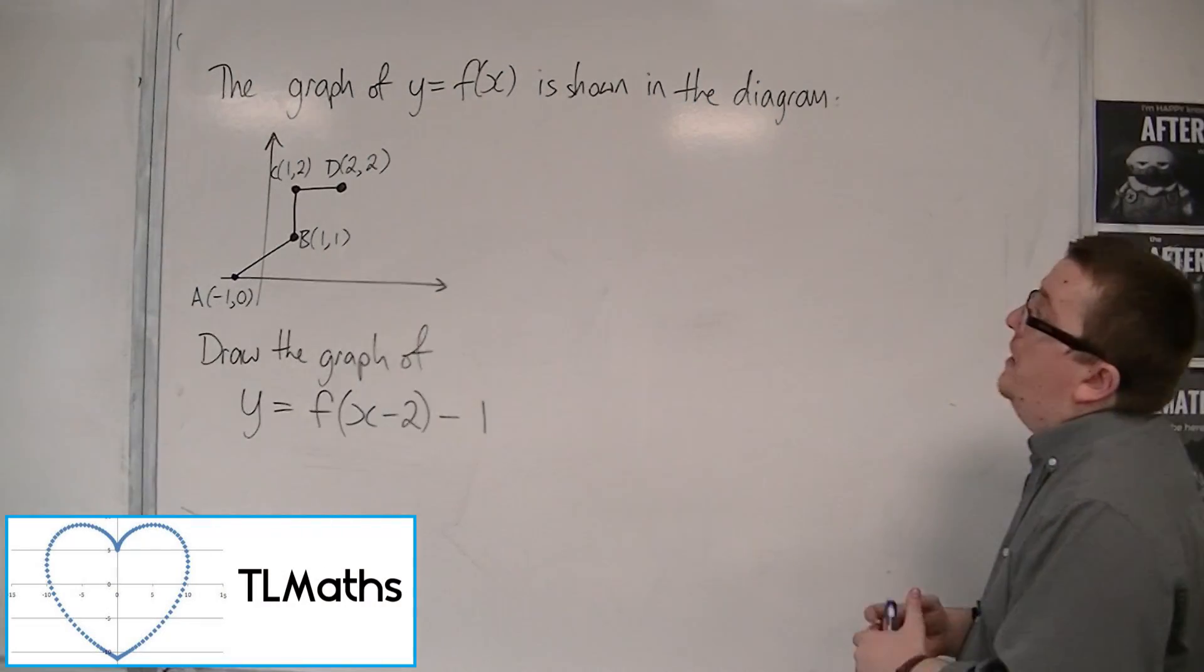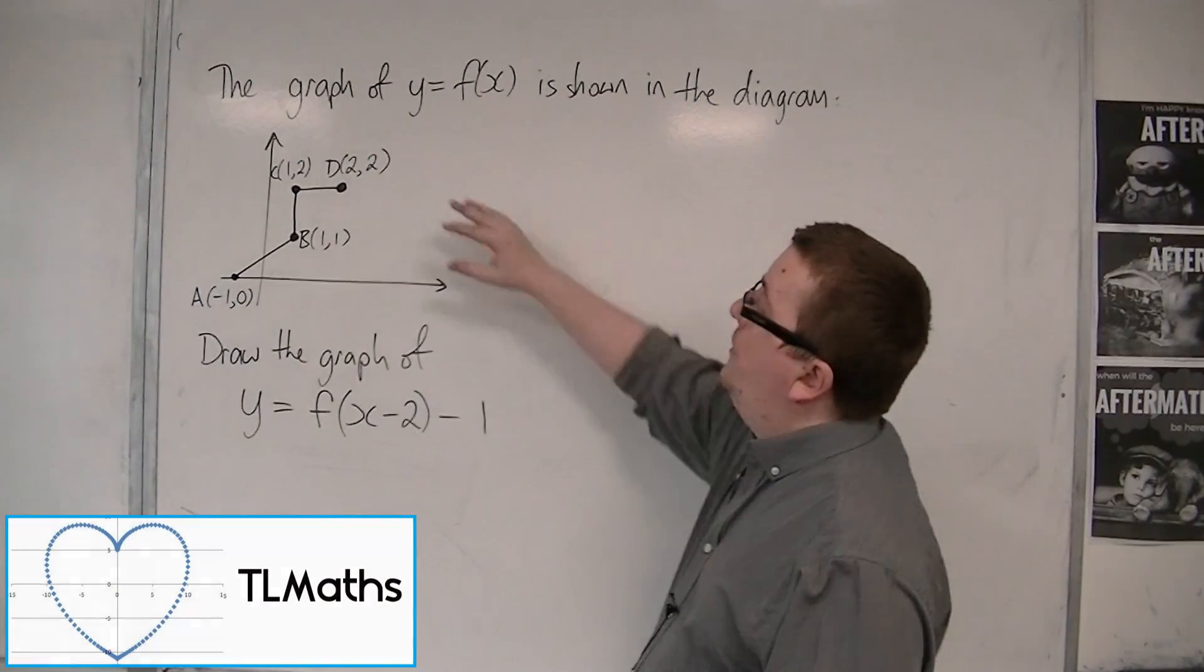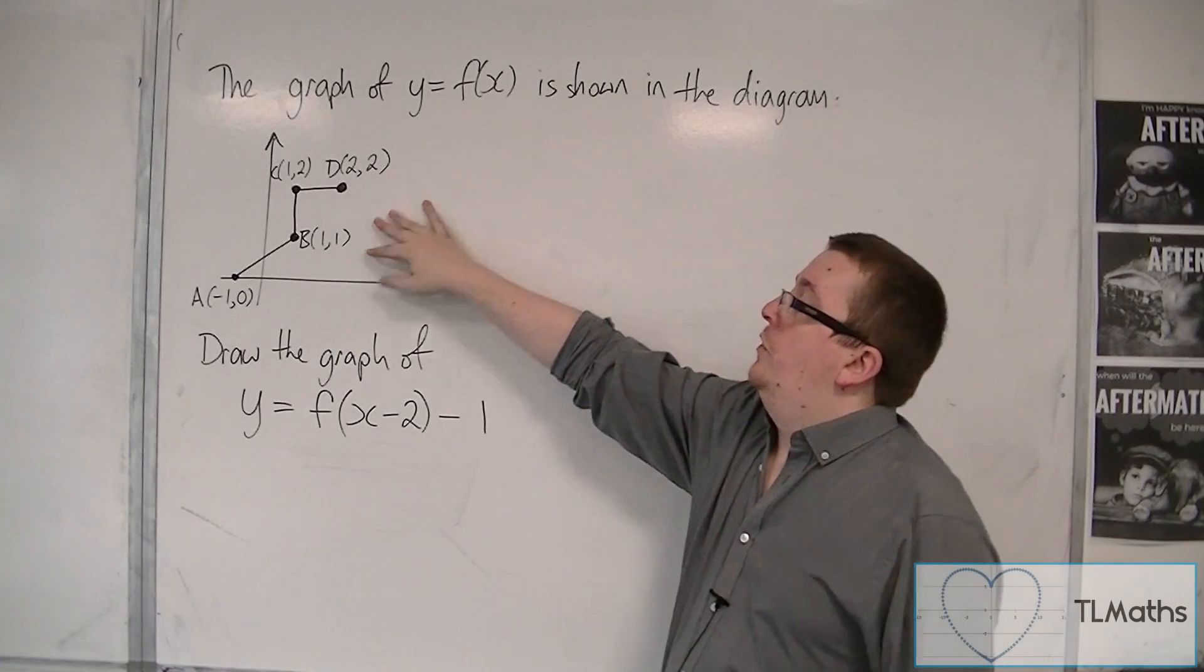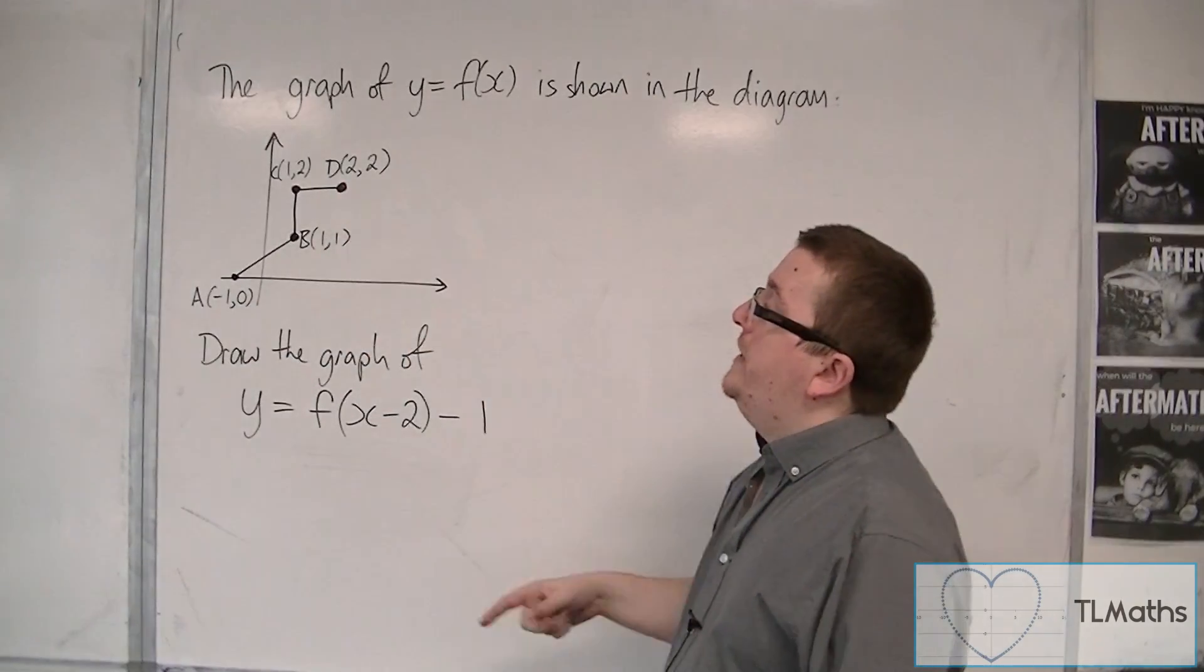OK, so let's say we have the graph of y is equal to f of x given by this shape here. We've got the points a, b, c and d labelled.